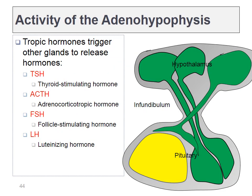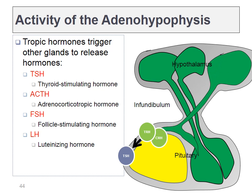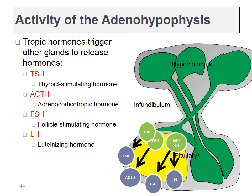The pituitary also releases TSH, ACTH, FSH, and LH. These are all regulated by hypothalamic releasing hormones. TRH triggers the release of TSH, CRH triggers production and release of ACTH, and gonadotropin-releasing hormone, GnRH, triggers the release of FSH and LH, the two hormones that affect our gonads.